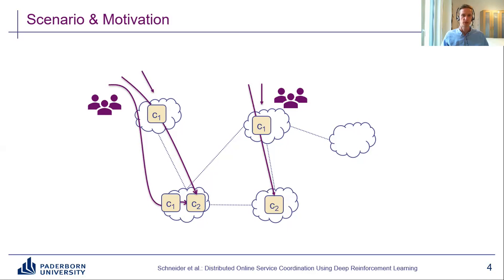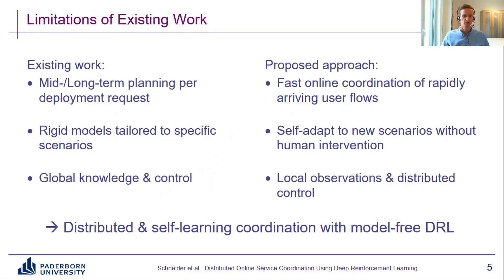This online service coordination problem is not new — there is a lot of existing work in the area. But when we looked at existing work, we found three major limitations when thinking about how to apply these approaches in practice. First, existing approaches often focus on mid- to long-term planning per deployment request. The problem is that operational reality often diverges from any initial plan. So instead, we really look at rapidly arriving user flows and try to process these flows at runtime — we're in a much more fast-paced scenario here.